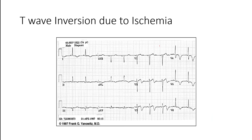The most common causes of a T-wave inversion are myocardial ischemia or infarction, though there can be other causes too — hypertrophic cardiomyopathy and pulmonary embolism could lead to it as well. But quite often we're thinking myocardial ischemia or myocardial infarction.